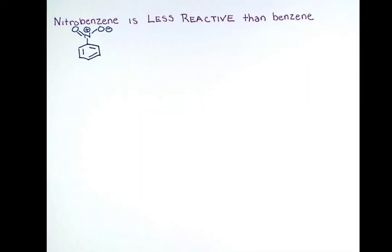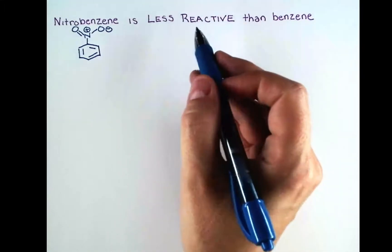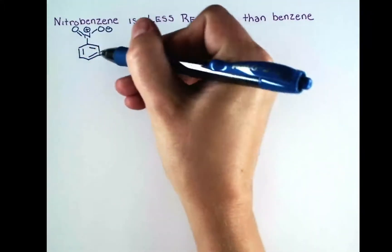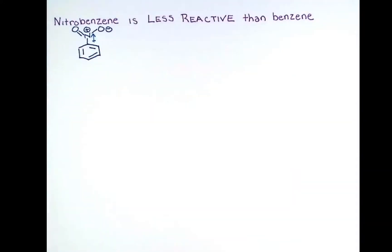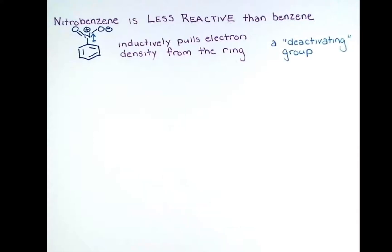Now that we've seen the nitration mechanism, let's talk a little bit more about this derivative we've made. Nitrobenzene is less reactive than benzene. Remember that positive charge on the nitrogen atom? That is inductively electron withdrawing, and it pulls electron density out of the ring. Since benzene needs to use its electrons to react in electrophilic aromatic substitution, they are now less available due to this inductive effect. We call the nitro group a deactivating group because it deactivates the benzene ring toward further electrophilic aromatic substitution reactions.